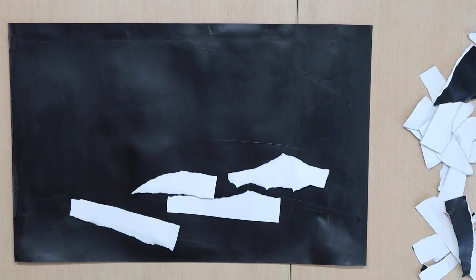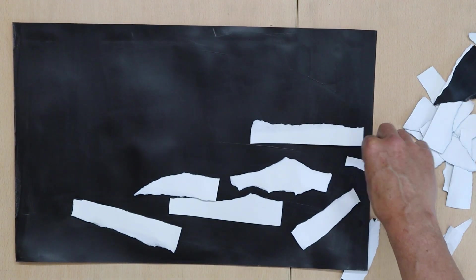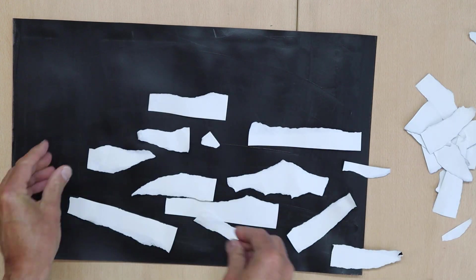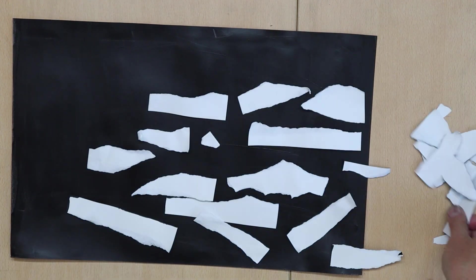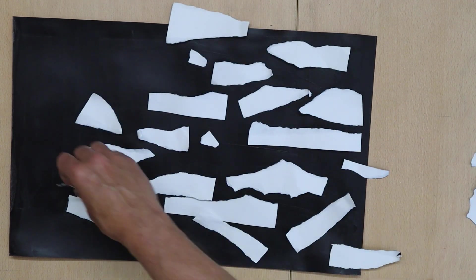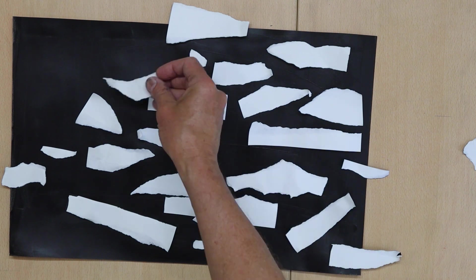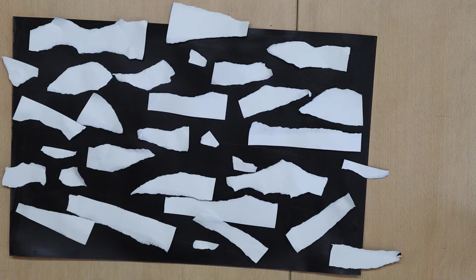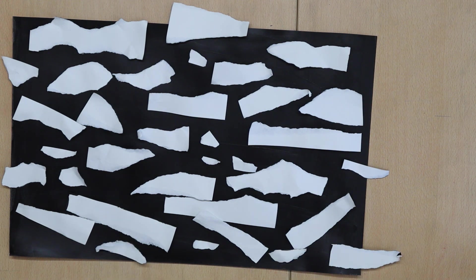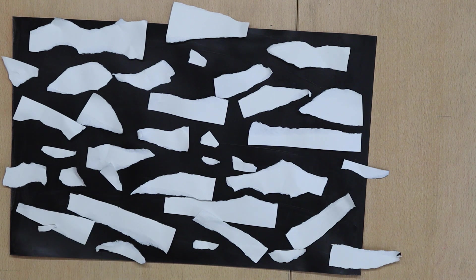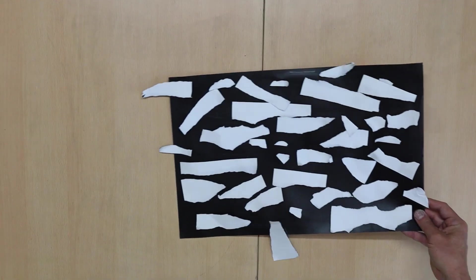I start again and this time I put the pieces in line with the length of the sheet. This looks quite different. I don't know about you, but I notice I really love all these tiny little pieces mixed with the bigger ones.